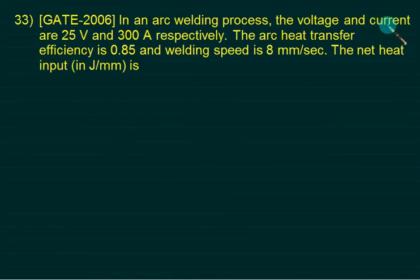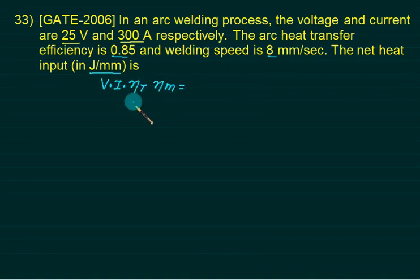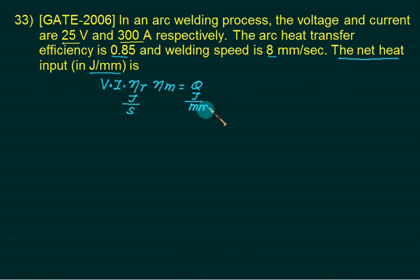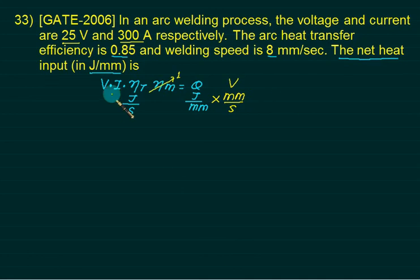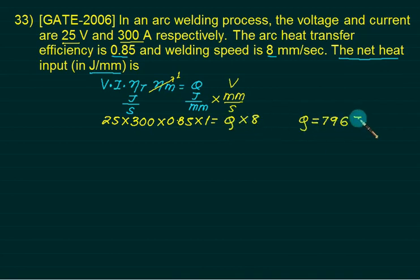In an arc welding process, the voltage and current are 25 volts and 300 amperes, arc heat transfer efficiency is 85%, and welding speed is given. You have to find the net heat input Q. We have V × I, then multiply by heat transfer efficiency. The unit of net heat input is joules per mm. Using dimensional analysis: joule per second divided by velocity (mm/s) gives joules per mm. So Q = V × I × η / velocity = 25 × 300 × 0.85 / velocity = 790 J/mm.